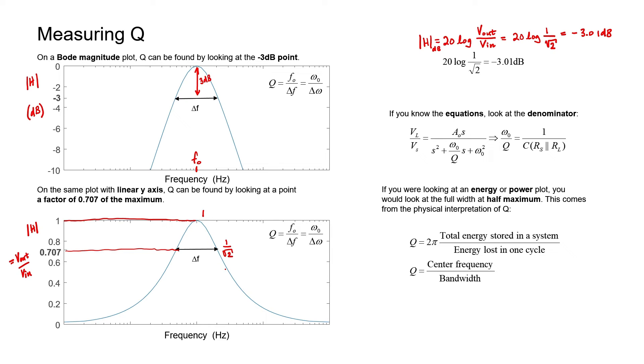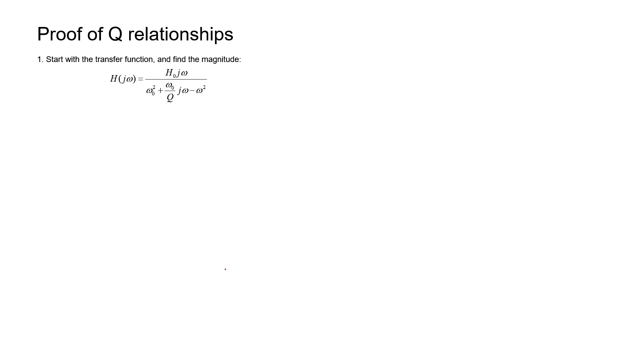That second relationship comes from the physical interpretation of Q: Q is the total energy stored in a system divided by the energy lost in a cycle. I'm going to now prove these relationships are connected. The second method of finding Q — looking at a graph and just reading it — is very useful because it doesn't require any prior knowledge of the circuit. You could have a black box circuit with no idea how it behaves, but you can learn a lot about it by looking at its frequency response. You can calculate Q without knowing how the inductors, capacitors, and resistors are arranged.